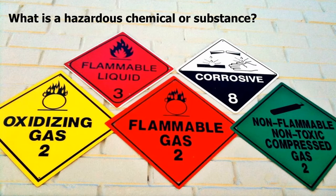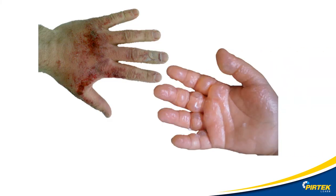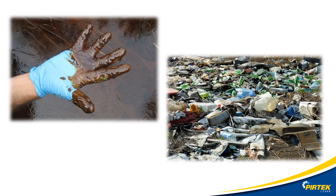Hazardous chemicals are substances, mixtures and articles that can pose a significant risk to health and safety if not managed correctly. Hazardous chemicals can cause serious long-term injuries like burns, skin conditions, poisoning and eye damage if not handled correctly. Environmental and property damage is another consequence of incorrect handling of hazardous goods.